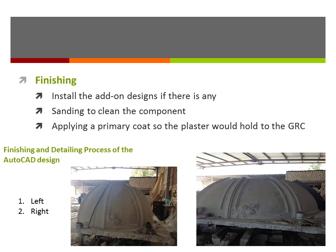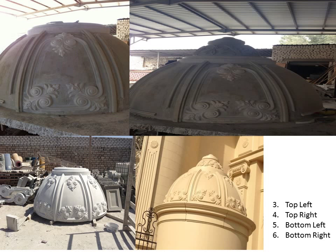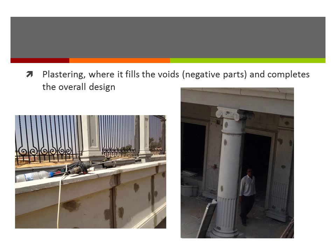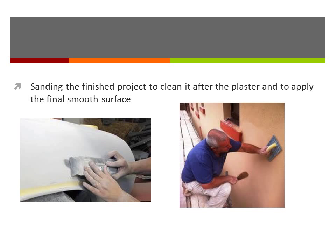The finishing process involves installing any add-on designs, sanding to clean the component, and applying a primary coat so the plaster will hold to the GRC. Plastering fills the voids, negative parts, and completes the overall design. Sanding is then required to finish the project, clean it after plastering, and apply the final smooth surface.